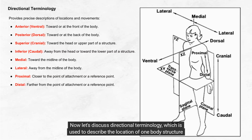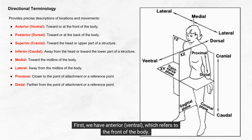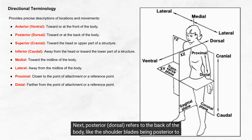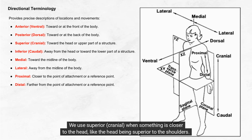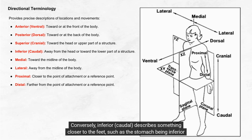Now let's discuss directional terminology, which is used to describe the location of one body structure relative to another. Anterior or ventral refers to the front of the body — for example, the chest is anterior to the spine. Posterior or dorsal refers to the back of the body, like the shoulder blades being posterior to the chest. We use superior or cranial when something is closer to the head, like the head being superior to the shoulders. Conversely, inferior or caudal describes something closer to the feet, such as the stomach being inferior to the heart. For locations closer to the midline of the body, we use medial — like the nose being medial to the eyes.